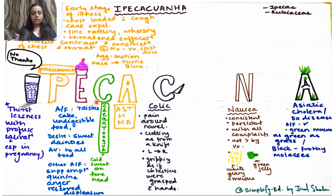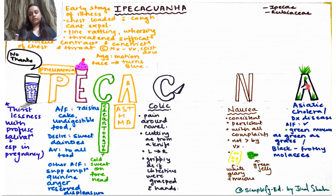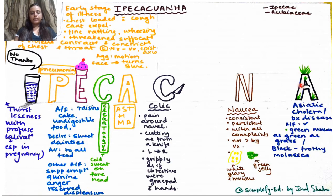The last A relates to GIT symptoms. There is Asiatic cholera with diarrhea that is grass-green, or it could be black, frothy, like molasses. This drug is indicated in all diarrheal diseases where stools are green as grass or black frothy molasses. The vomiting also had a green component — green jelly-like — so there is a correlation.